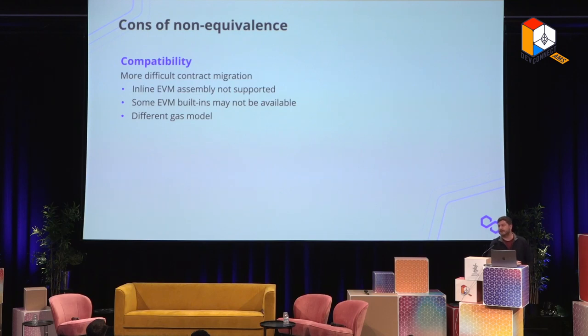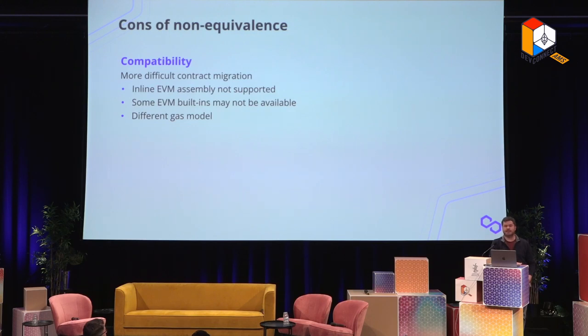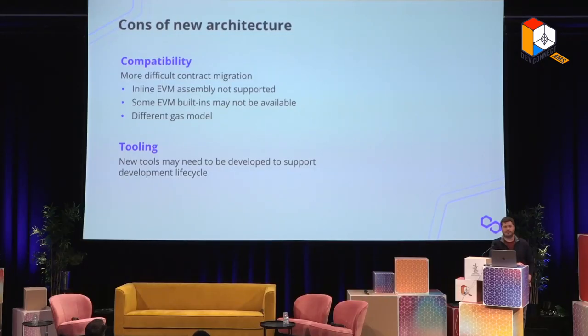The drawbacks are fairly clear as well. Compatibility is a big one — if you're not 100% EVM-adherent, there are migration challenges. Inline assembly may not work, some EVM built-ins may not work, and the gas model may differ. Smart contracts that optimize heavily for specific gas consumption need special handling when migrating to a non-EVM-equivalent system. Additionally, the tooling may not be there, so you may need to build new tools or adapt existing ones for developers.